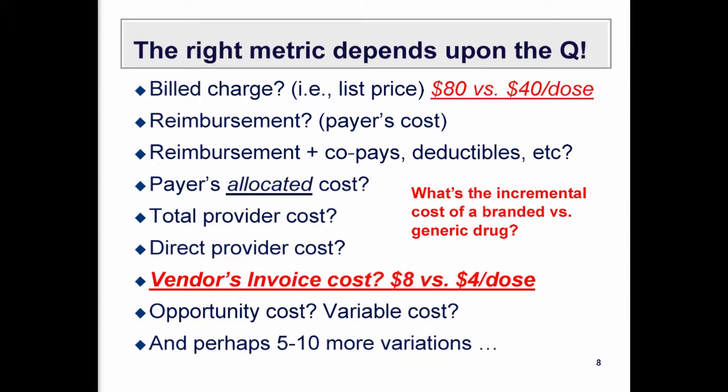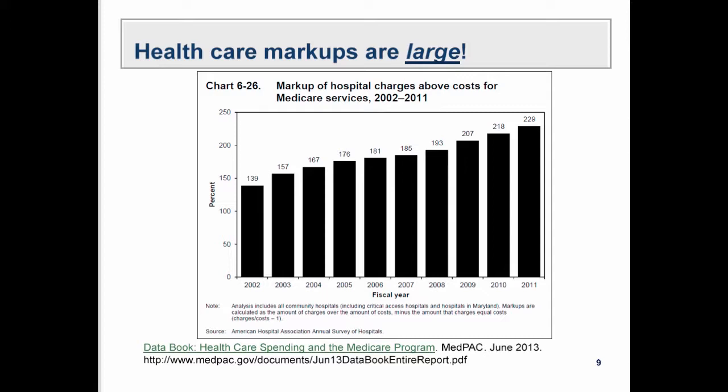Because the invoice price of the generic is lower, hospitals will typically choose the generic drug. The bill charge on the patient's bill may be forty dollars different between the two medications, but when you look at the cost from the loading dock through the pharmacy, the invoice cost may be only four dollars different. Really, the relevant difference in cost is four dollars.